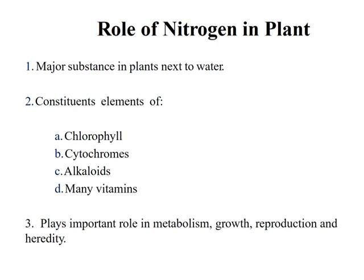Nitrogen plays a vital role in plants, as studied in the previous lecture. Nitrogen is part of amino acids, which are the building blocks of proteins, and proteins are required for cell division. It is the major substance in plants next to water, and is a part of chlorophyll, cytochromes, alkaloids, and many vitamins. Nitrogen plays an important role in metabolism, growth, reproduction, and heredity.